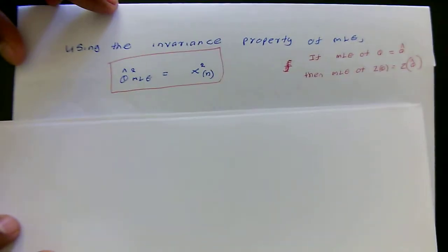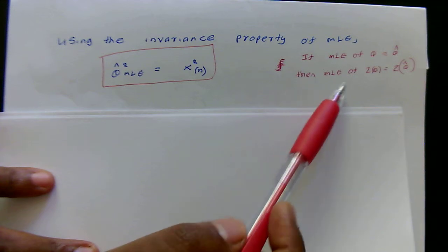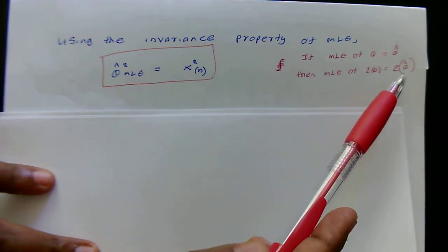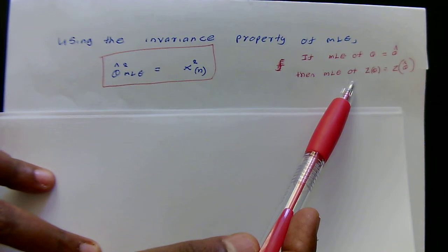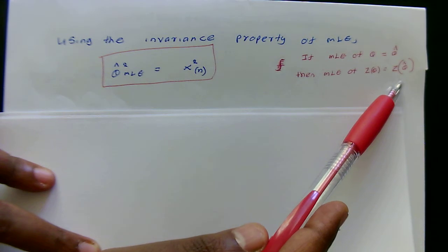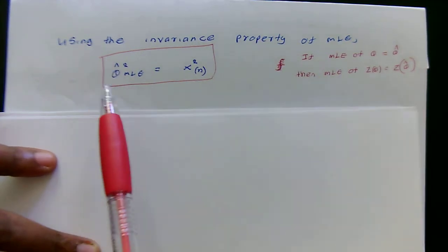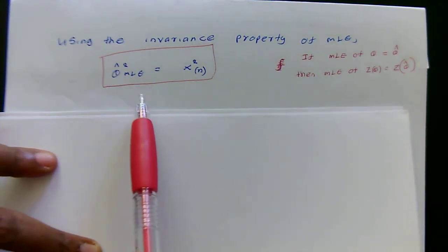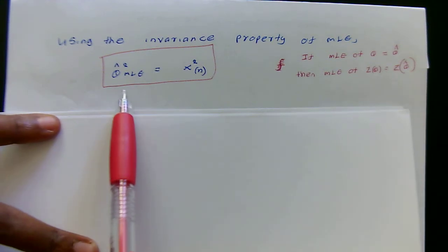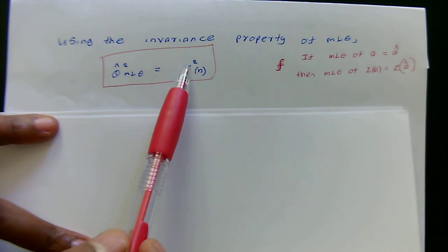To find the MLE of theta squared I will use the invariance property of MLE. The invariance property states that if the MLE of theta is theta-hat, then the MLE of any function of theta — say tau(theta) — is tau(theta-hat). Applying this property, the MLE of theta squared is equal to X_(n) squared, the square of the largest order statistic.